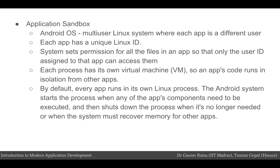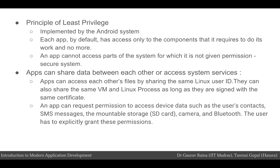By default, every app runs in its own Linux process. The Android system starts the process when any of the app's components are needed and shuts it down when it is no longer needed or when memory needs to be reclaimed for other apps. The Android system implements the principle of least privilege, wherein every app can only access the components it requires, ensuring no app has unauthorized access to any part of the system. If different apps want to share data, they can share the same Linux user ID, allowing them to share each other's files. Apps with the same Linux user ID and the same certificate can also run in the same Linux process and share the same VM. An app can also request permission to access device data such as the user's contacts, SMSs, gallery images, etc., and the user has to explicitly grant these permissions.